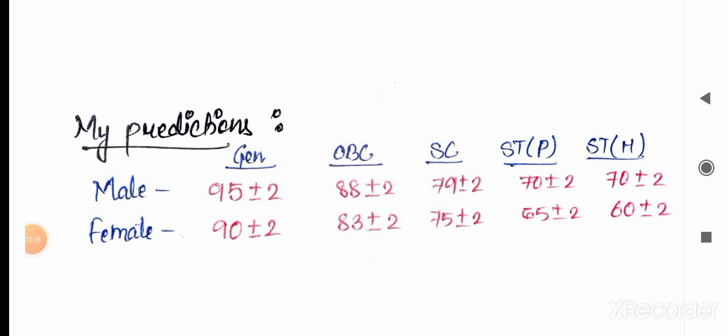I am so sure that for male it will not go below 90. Yes, I will not say it cannot go to 100 plus, but it can be less than 90 to 70. I don't think so. My prediction is general male 90 plus minus 2, OBC 88 plus minus 2, SC male 79 plus minus 2, ST 70 plus minus 2 or plains or ST hills 70 plus minus 2, and female general 90 plus minus 2 and other categories accordingly.